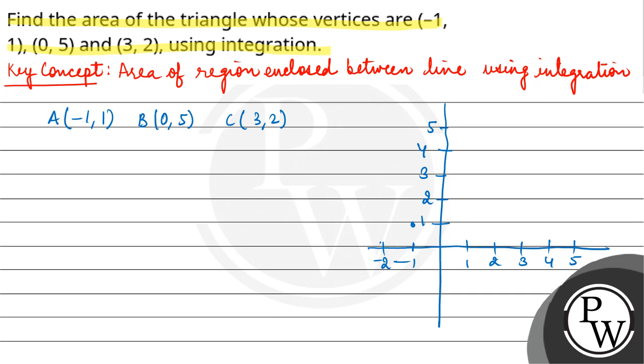This is minus 1 and 1. We have point A minus 1, 1, we have point B 0, 5, and we have point C 3, 2.